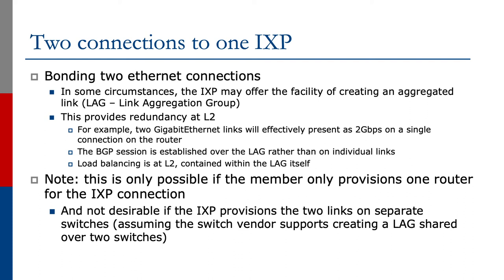The other thing we could do is bond the two ethernet connections together. In some circumstances, the IXP may offer the facility of creating an aggregated link — called a LAG, a link aggregation group. This provides redundancy at layer 2; for example, two gigabit ethernet links will effectively present as 2 gigabits per second on a single connection on the router. The BGP session is established over the LAG rather than on individual links, and load balancing is at layer 2 contained within the LAG itself. This is only possible if the member provisions one router for the IXP connection, and it's not desirable if the IXP provisions the two links on separate switches, unless the switch vendor supports creating a LAG shared over two switches — which starts getting to be quite a complex configuration and probably isn't really worth the extra complexity.